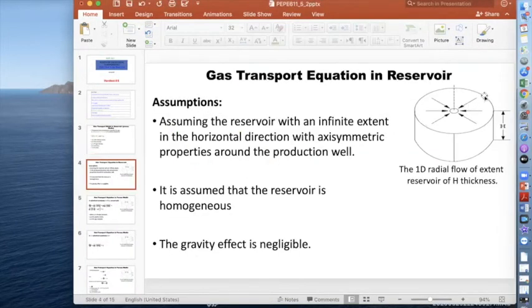We are focusing on the radial direction with infinite extent, meaning we'll use a far boundary condition, maybe as constant pressure. Because the well shape is cylindrical, we will assume it is axisymmetric—symmetric around the axis of the cylinder.